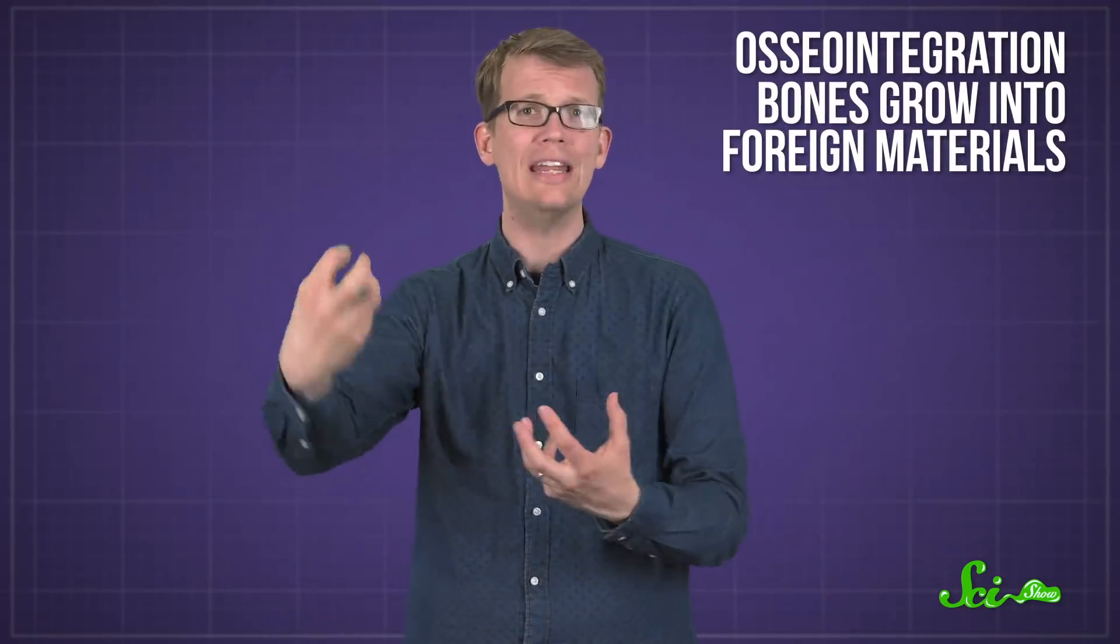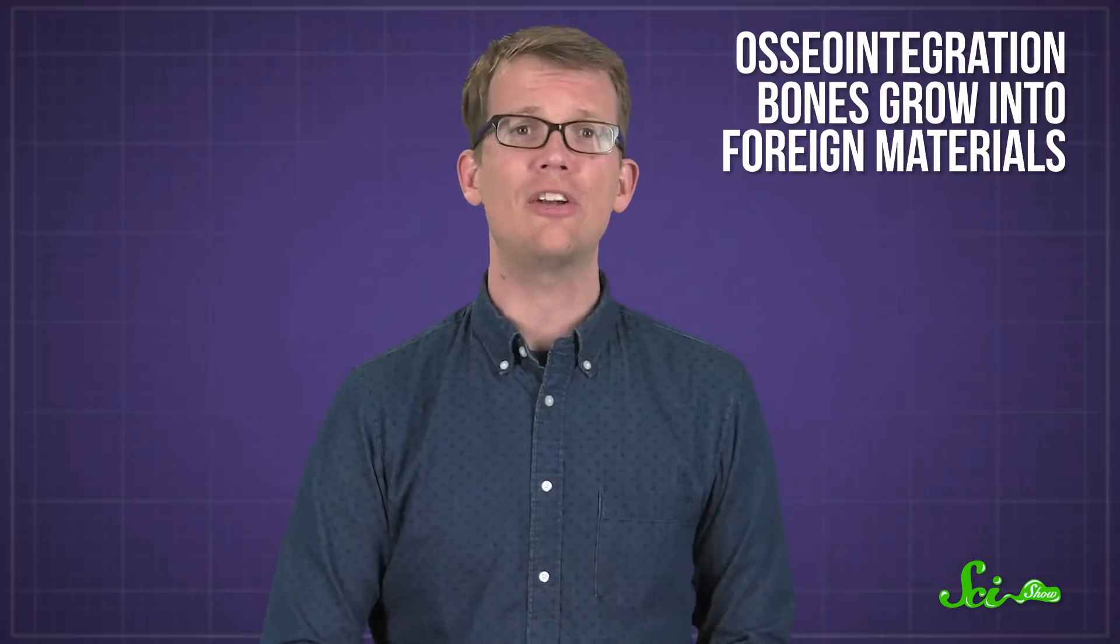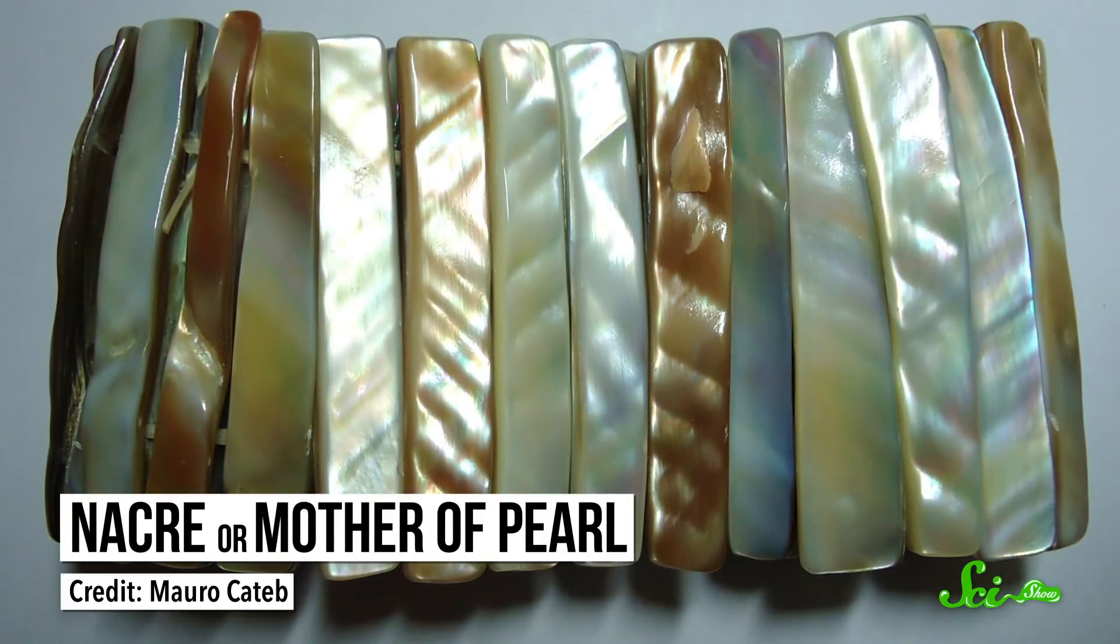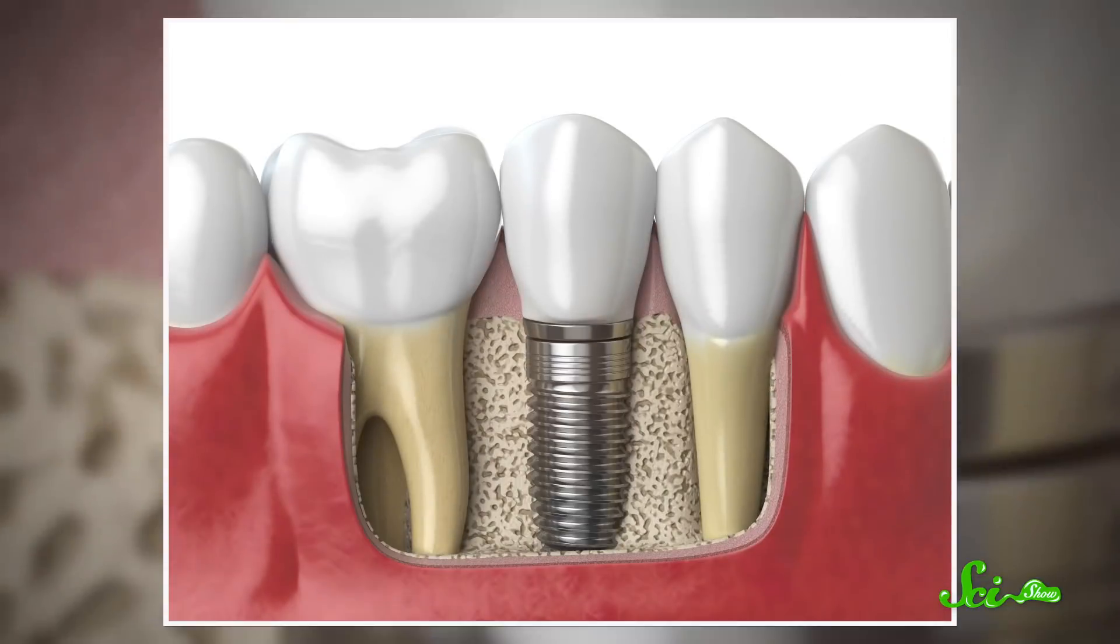Osseointegration is where bones grow into foreign materials. Humans actually have been doing this for a long time, like in 600 CE, when the Mayans used Mother of Pearl to make teeth that integrated into the jawbone. But it wasn't until 1965 that Per-Ingvar Brånemark used osseointegration to put titanium dental implants into the first human patient.